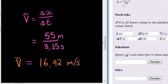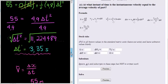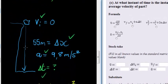There's our average velocity and the question now is at what instant during this fall is the actual velocity, the instantaneous velocity, equal to 16.42?